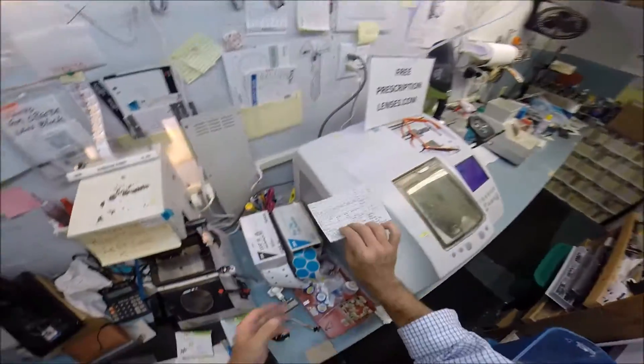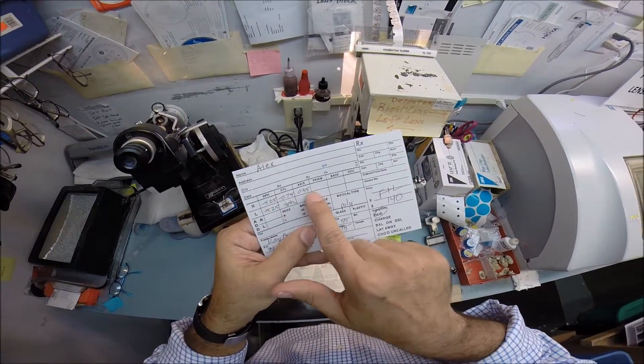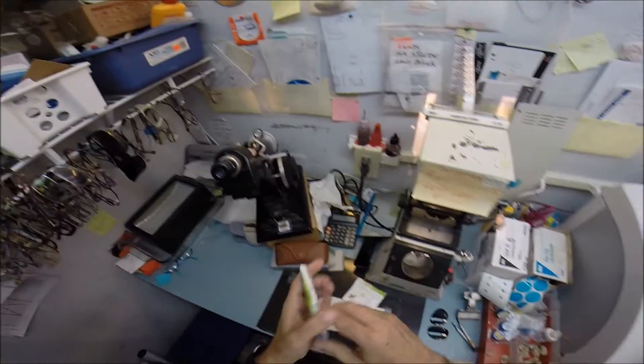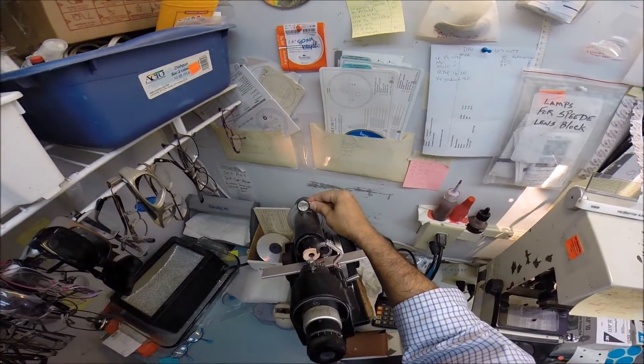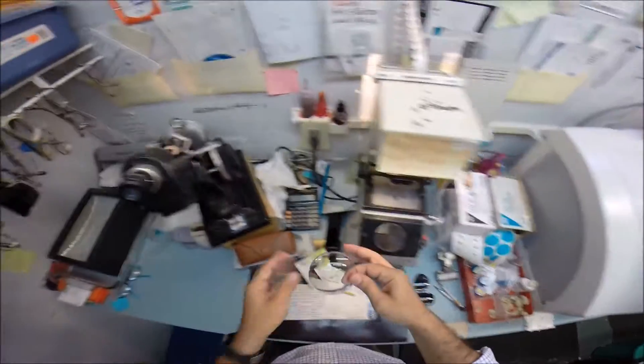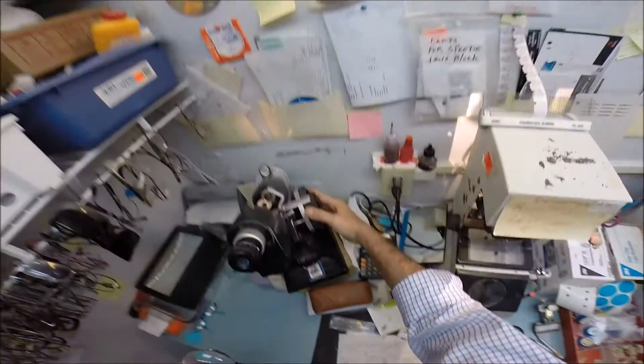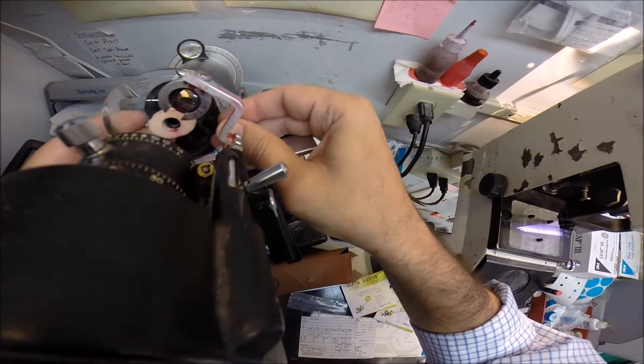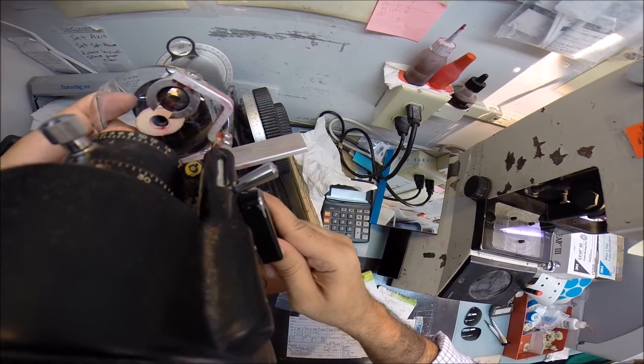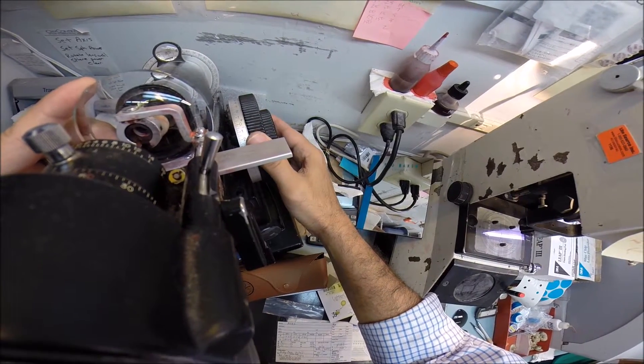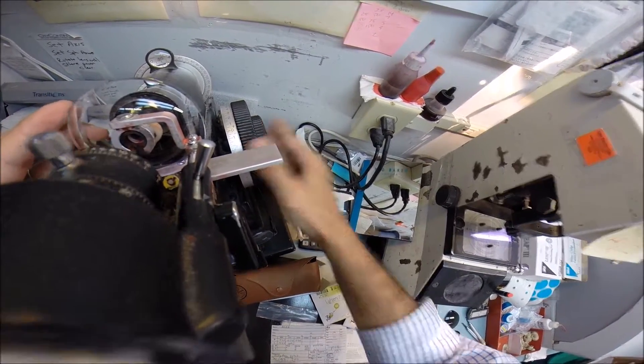I'm going to get your right lens. I need your paperwork again, which reads minus 5.25, minus 75 at 35. I'm going to spin the axis wheel of my Marco 101 lensometer to 35. Take your lens out. I'm going to put the power drum on minus 5.25. Put your lens in there. Rotate until the sphere power comes in clearly. Find the optical center. I'm going to check your astigmatism correction.